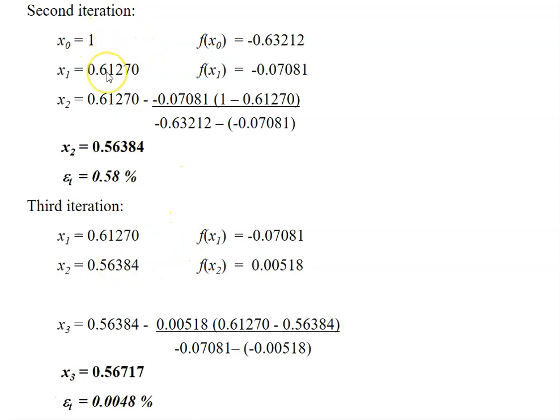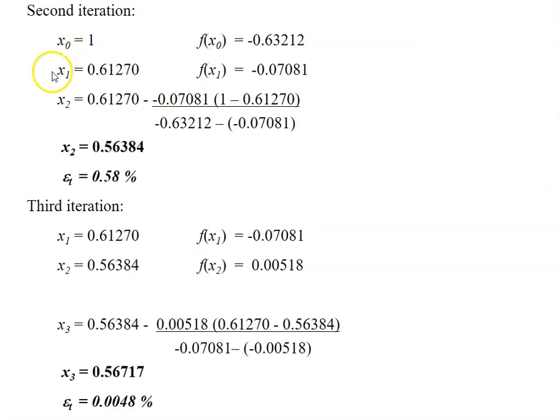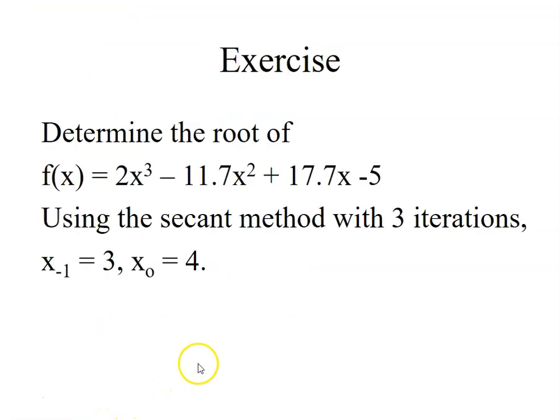1 and 0.61270 here will be the initial guesses for the second iteration. So again, you just repeat the same thing all over again to calculate a new root of x3, 0.56717 with true error of even decreased to 0.0048%.